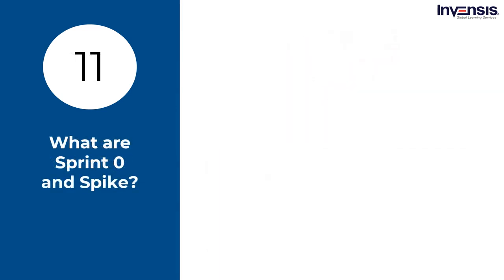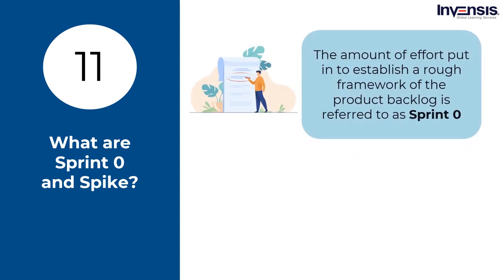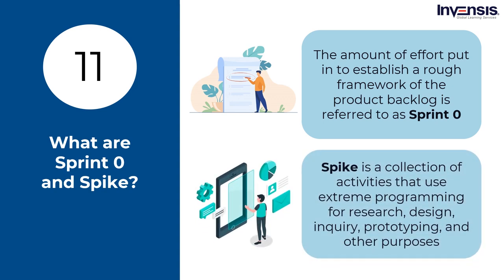What are sprint zero and spike? Sprint zero is the amount of effort put in to establish a rough framework of the product backlog, and it also contains information about calculating product release dates. Sprint zero is necessary for creating a framework for the project and research spikes, maintaining a minimalist design, and being lightweight with a low velocity. A spike is a collection of activities that use extreme programming for research, design, inquiry, prototyping, and other purposes. The spike tries to mitigate the technical approach's risk by acquiring knowledge to comprehend requirements better and increase dependability.